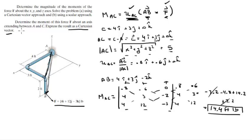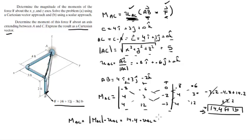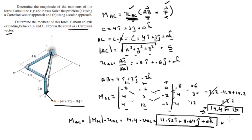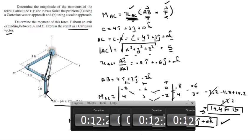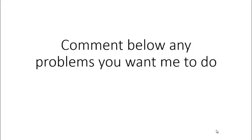Since they want the moment as a Cartesian vector, we multiply the magnitude 14.4 by the unit vector UAC. So 14.4 × (0.8i + 0.6j + 0k) = 11.52i + 8.64j + 0k foot-pounds. That is the final answer for the moment that F creates about the AC axis in Cartesian vector form. Please comment below if you want me to do any problems and I'll be happy to help.